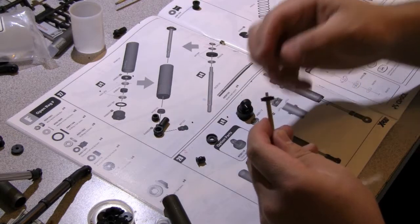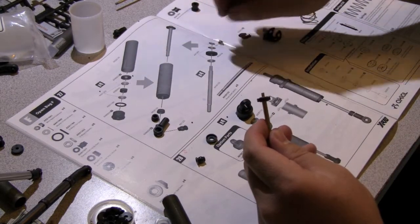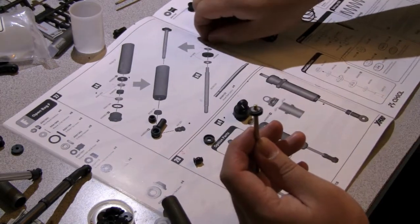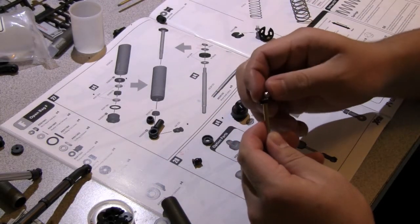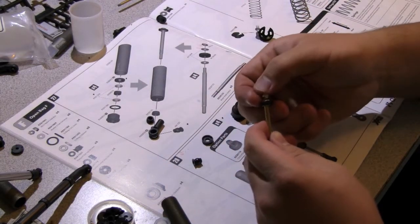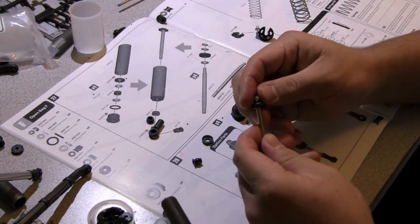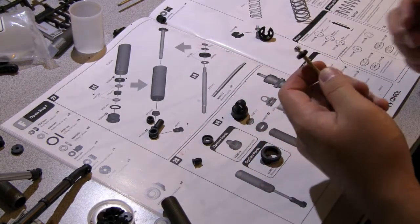And then you have the M2.5 nylon locking nut. So what Axial has gone ahead and done is actually put grooves on the ends of the shock piston so you can put your pliers there without having to worry about damaging the actual shock piston.